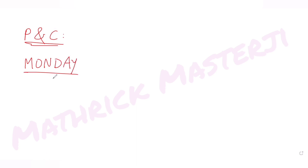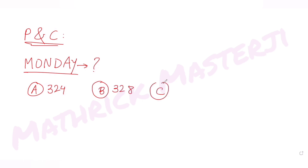Today's question is from the topic of permutations and combinations. The question tells us that all words, with or without meaning, are made using all the letters of the word MONDAY, and these words are written in a dictionary with serial numbers. We have been asked to find the serial number of the word MONDAY. The answer choices given are 324, 328, 326, and 327.